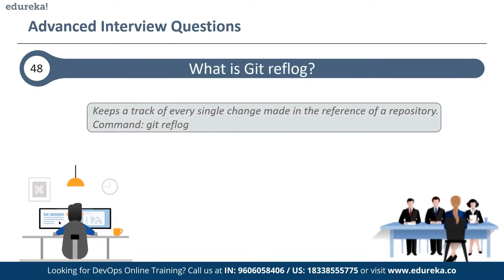The next question is: what is git reflog? The reflog command keeps track of every single change made in the references — that is, the branches or tags of a repository — and keeps a log history of branches and tags that were either created locally or checked out. Reference logs include commit snapshots of when a branch was created or cloned, checked out, renamed, or any commits made on the branch. This command must be executed in the repository that has the lost branch. For a remote repository situation, you have to execute the reflog command on the developer's machine that had the branch.